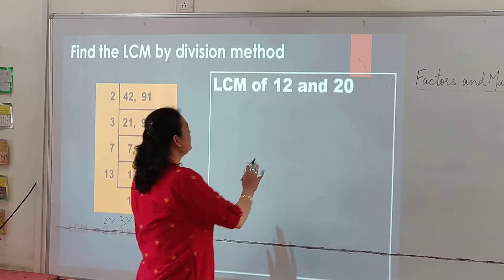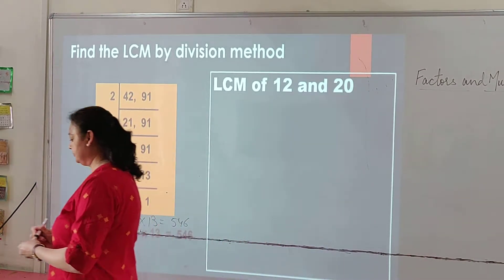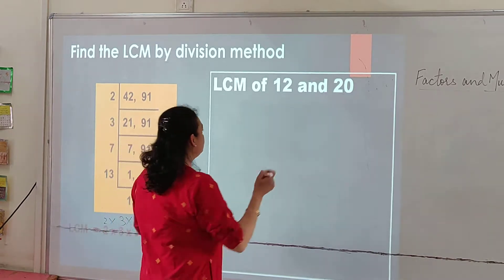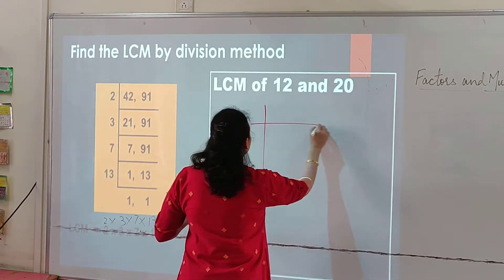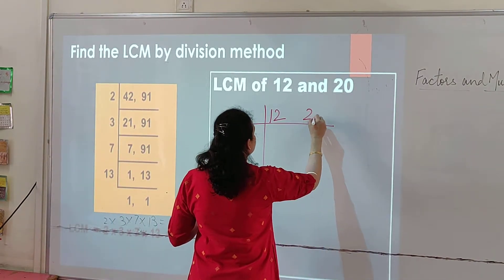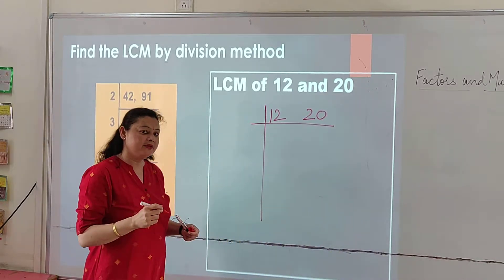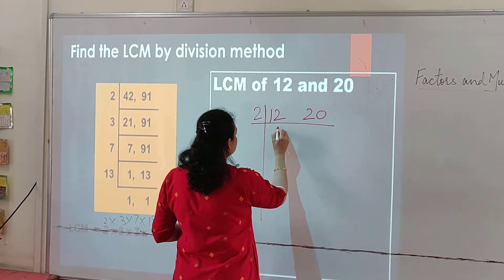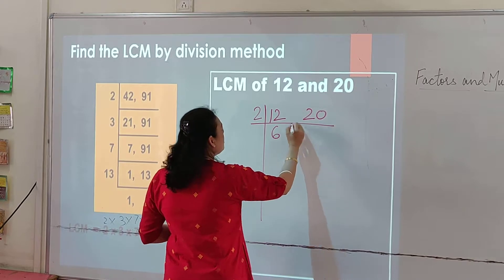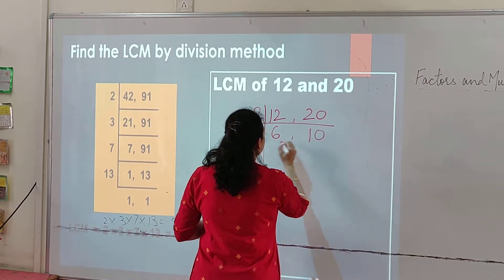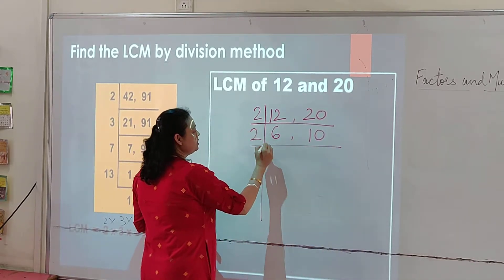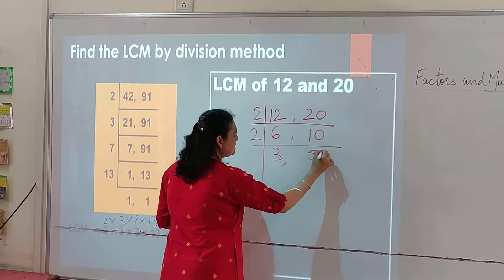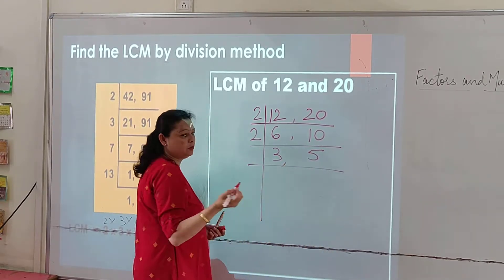Now let's solve this LCM with the help of division method. Division method we have already done. 12 and 20. Since both of them are even numbers we will start with 2. 2 times 6 is 12, and 2 times 10 is 20. 2 times 3 is 6, and 2 times 5 is 10. Now we have got both the numbers prime.